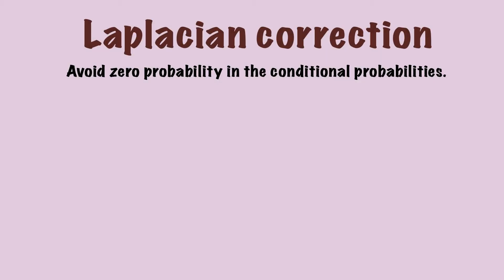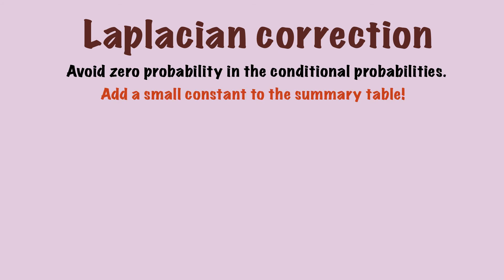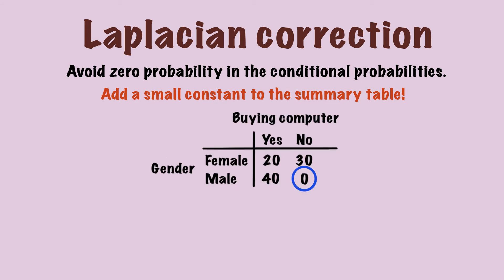In fact, Laplacian correction is exactly used to avoid zero probabilities in conditional probabilities, and it's accomplished by adding a small constant to the summary table. For example, we want to know whether a person will buy a computer given the gender, so buying computer is our target attribute. As you can notice, there is a zero in this table. What Laplacian correction does is adding constant c to these two positions, so 40 becomes 40 plus c, and 0 becomes c.